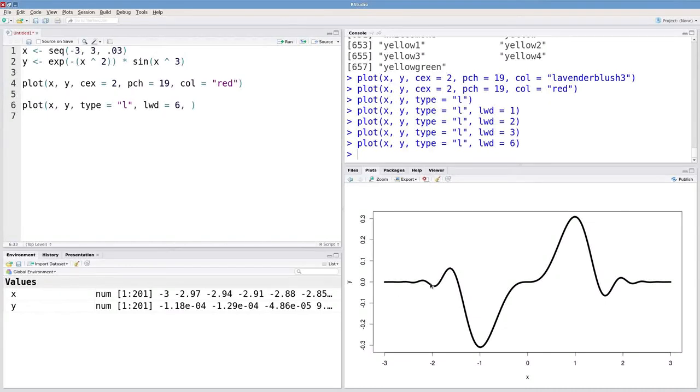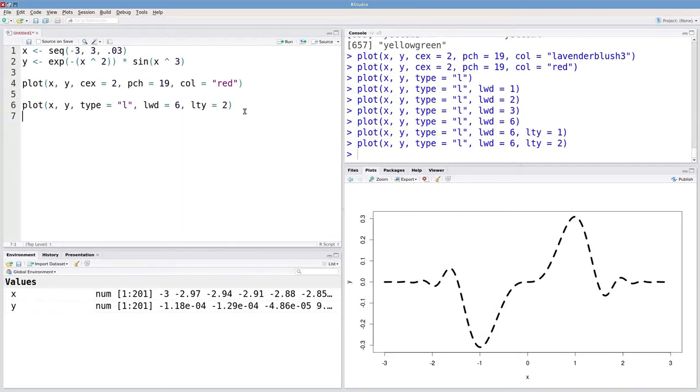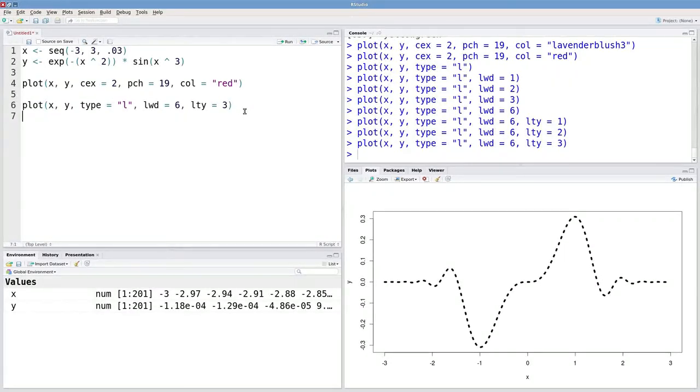For the actual type of line, we can specify an LTY argument. Defaults to 1 to give you a solid line. 2 gives you a dashed line. 3 gives you a dotted line. And you've got some other options as well.